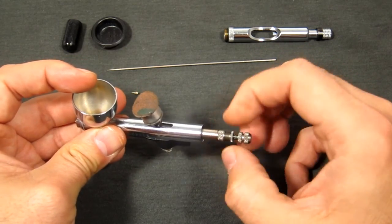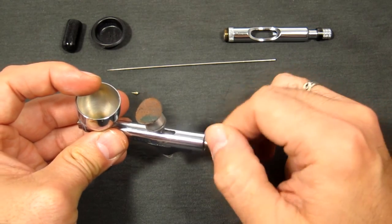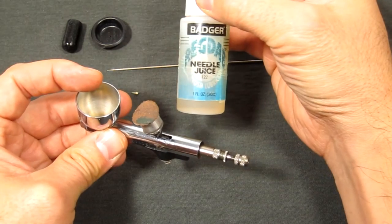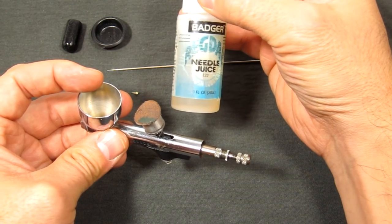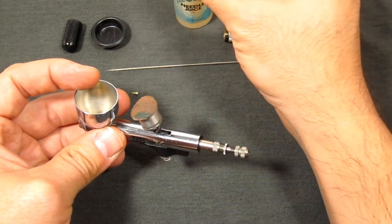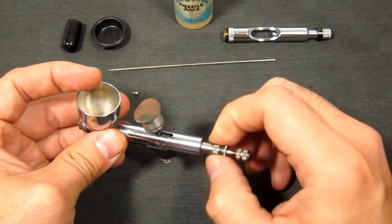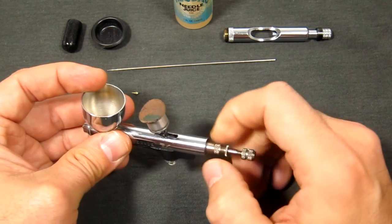Now you'll notice that there's lots of metal to metal contact here—there's no rubber bushings or anything like that—so that's why you should get yourself a bottle of this stuff, it's the Badger Needle Juice or Badger Regdab.